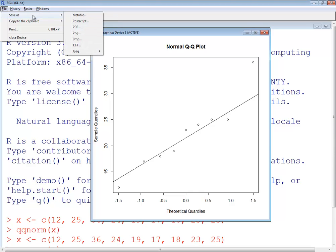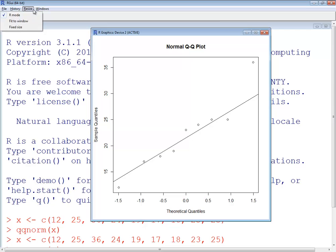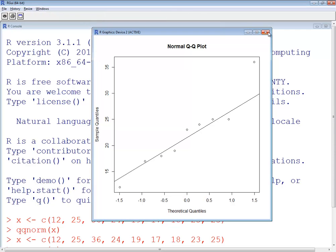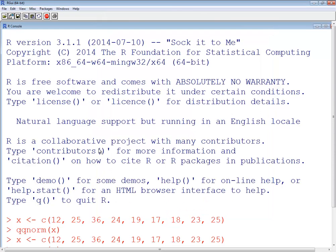But again, you can always capture the window. Also if you don't remember that, you could save it as different images. And then of course close the window, you just click the X. That's creating a normal probability plot in R.